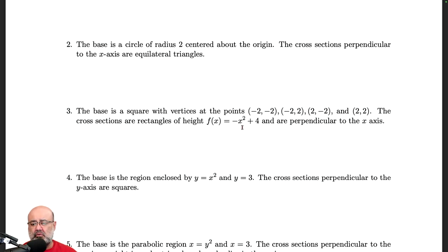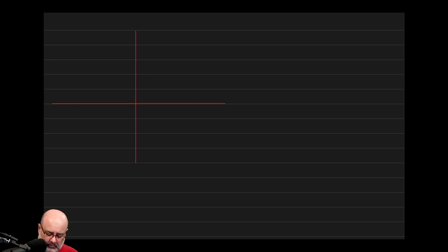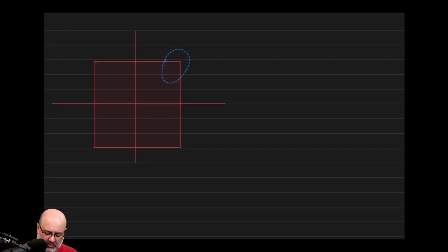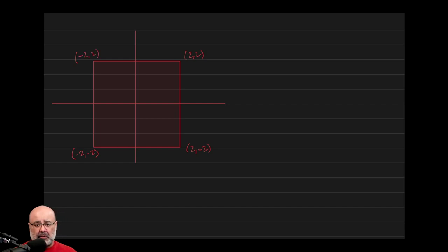Coming back, we need cross sections perpendicular to the x-axis. Let me draw a rough sketch of the square base. The vertices are: (2, 2), (2, −2), (−2, −2), and (−2, 2) — those are the vertices of the square centered at the origin.